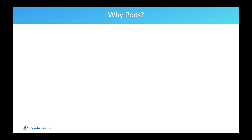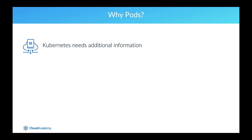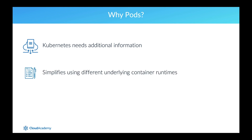Pods are an extra level of abstraction above containers. What benefits do we get by having this extra level of abstraction? Containers alone aren't enough for Kubernetes to effectively manage workloads. Pods allow you to specify additional information such as restart policies and probes to check the health of containers. Pods also allow you to seamlessly deal with different types of underlying containers, for example Docker and Rocket. You deal with pods regardless of the underlying container runtime.